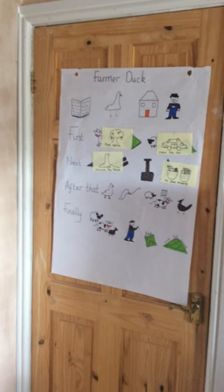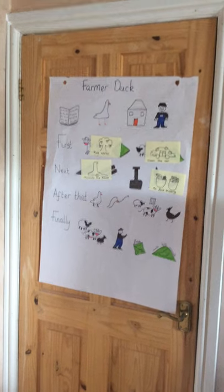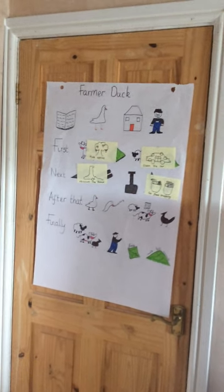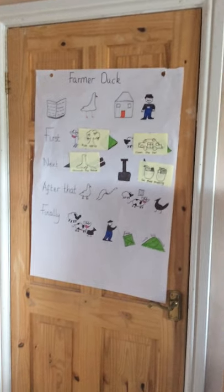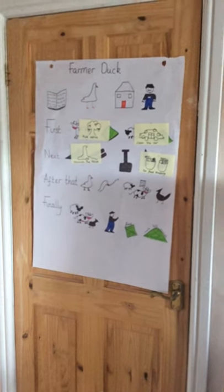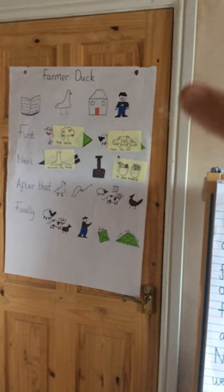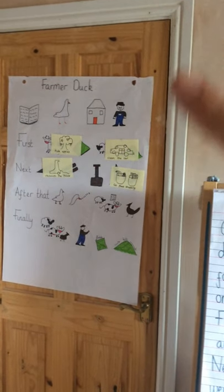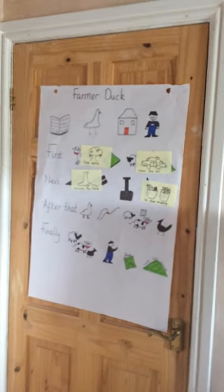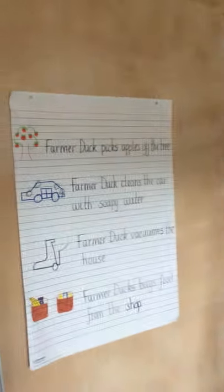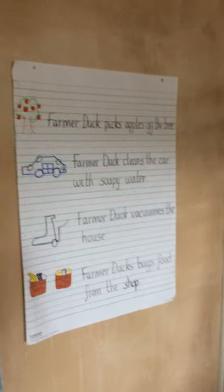On Monday, we came up with lots of ideas of other jobs that Farmer Duck could do rather than the ones already on our map. The original ones were: he took the cow from the field and the sheep from the hill, he chopped up the wood, and he dug up the weeds. Then we came up with new ones. On our class one, we came up with picking apples, cleaning the car, vacuuming the house, and going food shopping — but you would have come up with your own. Then we made changes to our story map.